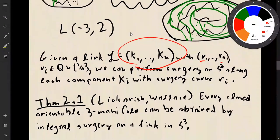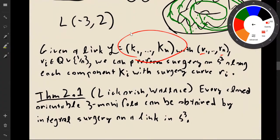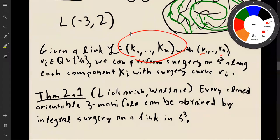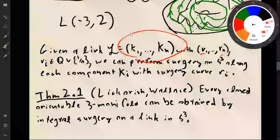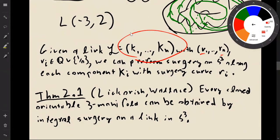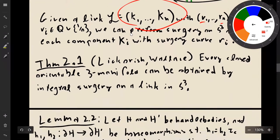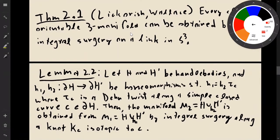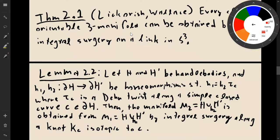Focusing on links in S³, this brings us to our big theorem of the day — first proved by Lickorish and independently by Wallace — which says that every closed orientable three-manifold can be obtained by integral surgery on a link in S³. The reason this is true really stems from a lemma: if you have two handlebodies H and H', glue them together in two different ways (giving gluing maps φ₁ and φ₂), and these two gluing maps differ by a Dehn twist along some curve, then the two resulting manifolds differ by integral surgery.